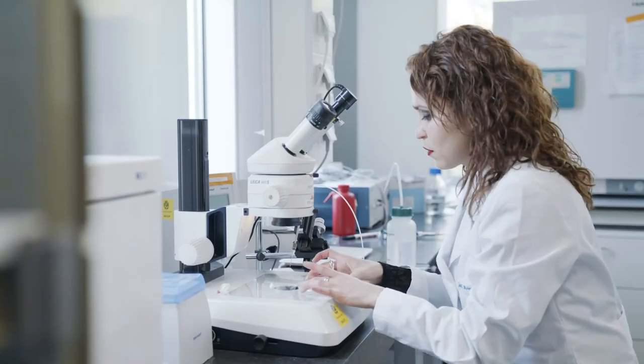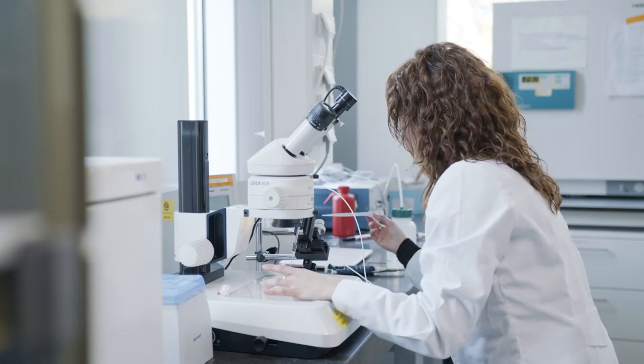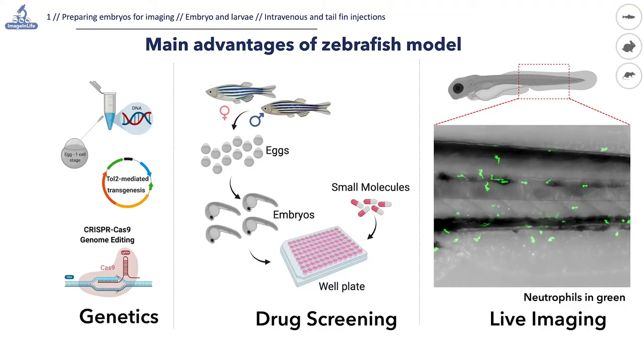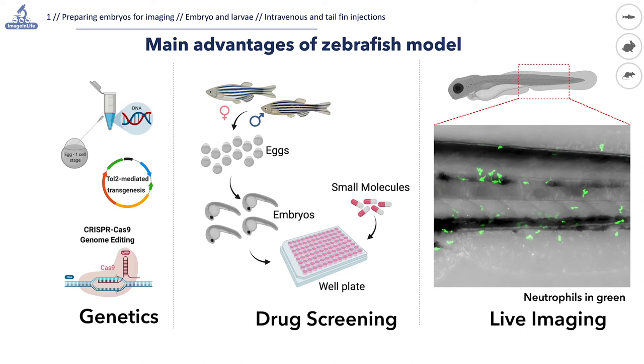In many diseases such as cancer and infectious diseases, the immune system plays an important role. We can use the zebrafish as a model organism to study these immune-related diseases because functional immune cells like macrophages and neutrophils are present since the first days of development. In this field of research, there are many genetic tools available, the model is very suitable for drug screening, and embryos and larvae are optically transparent, which makes the zebrafish model perfect for live imaging of disease processes.